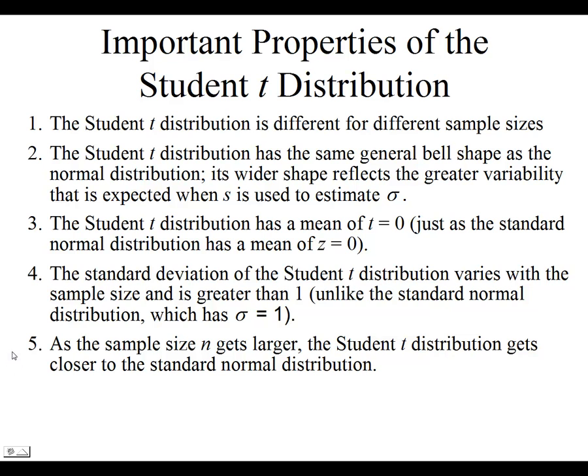And as n increases, as n gets sufficiently large, the student t-distribution will basically become the normal distribution.